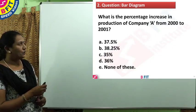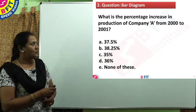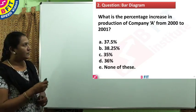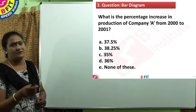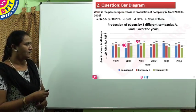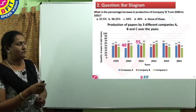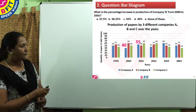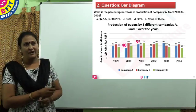Question 2: What is the percentage increase in production of Company A from 2000 to 2001? For Company A in 2000, the production was 40 lakh tons, and in 2001, the production was 55 lakh tons.